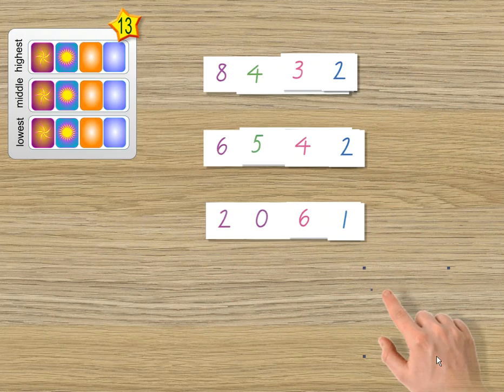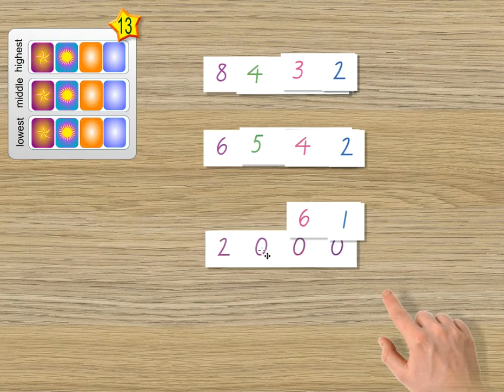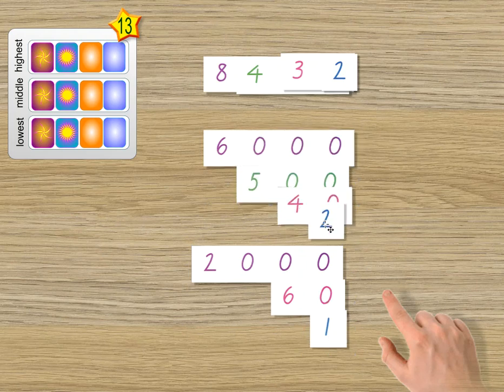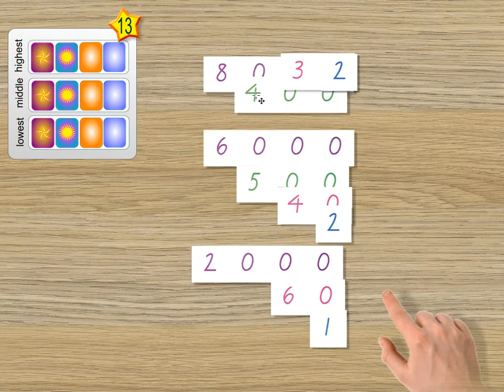You can record that in your maths book variously, like this. Or you could do the breakdown like this as well. That would be helpful to help understand how the numbers are made. How the values are made, rather, out of these numbers.